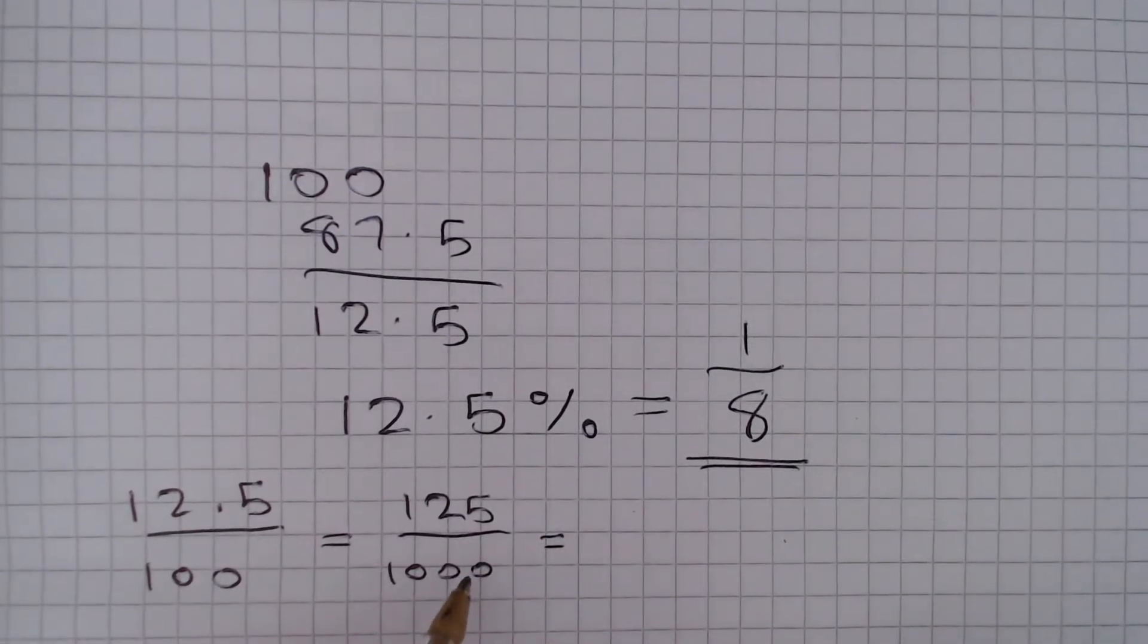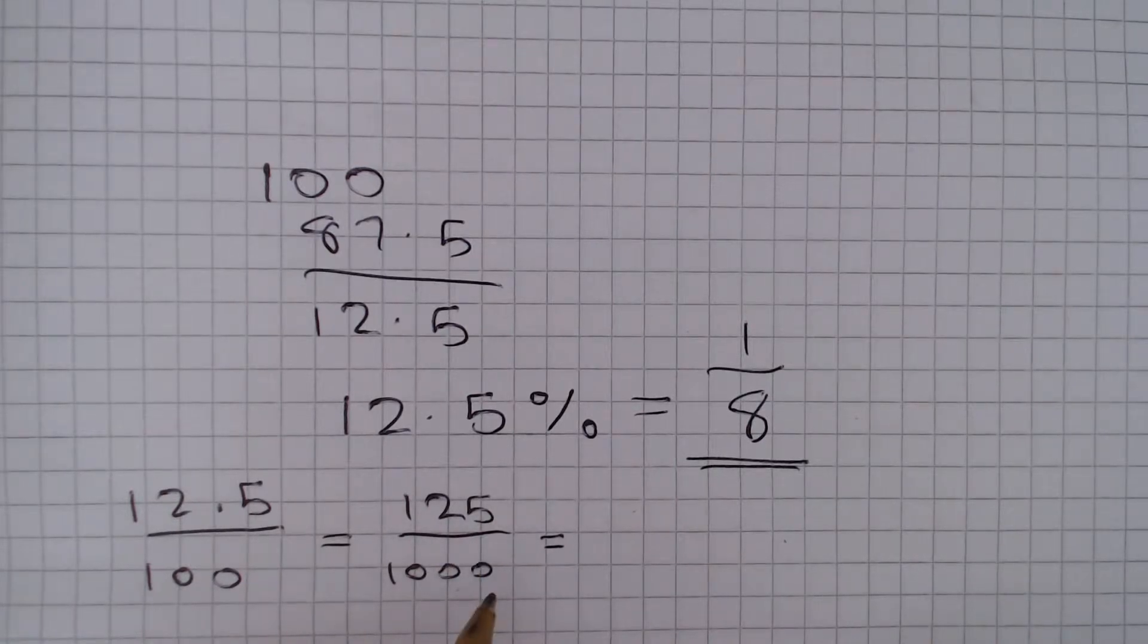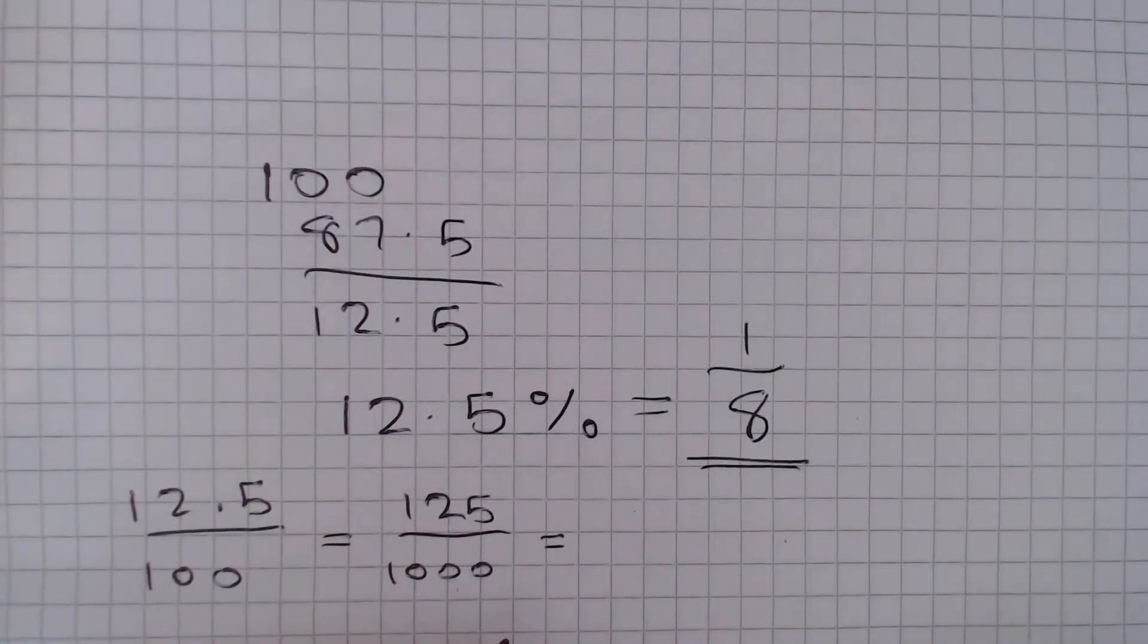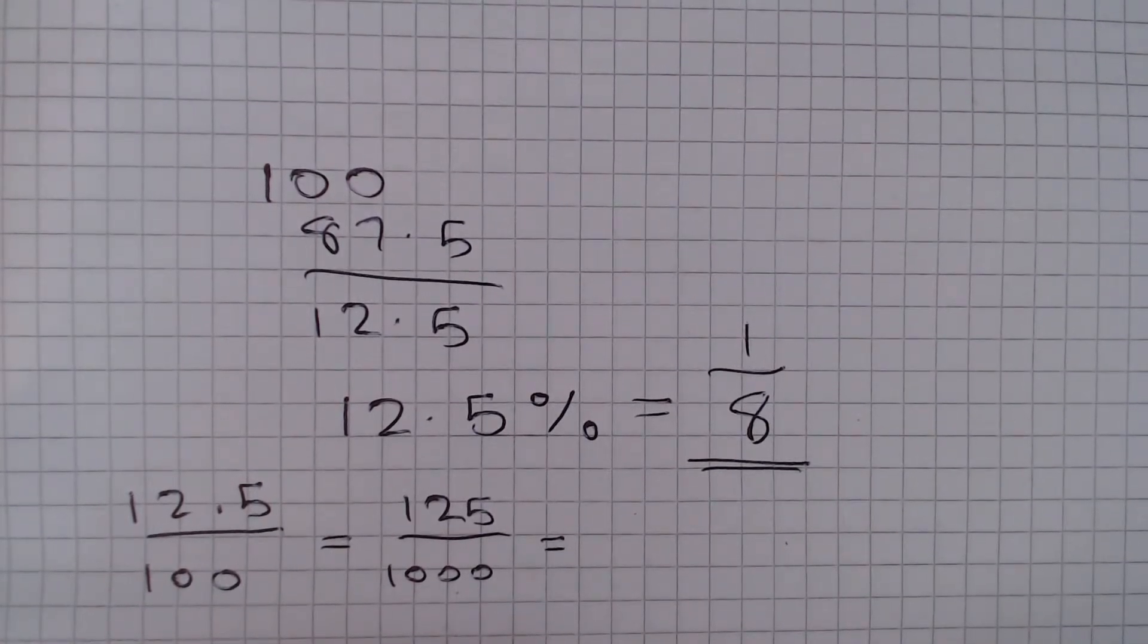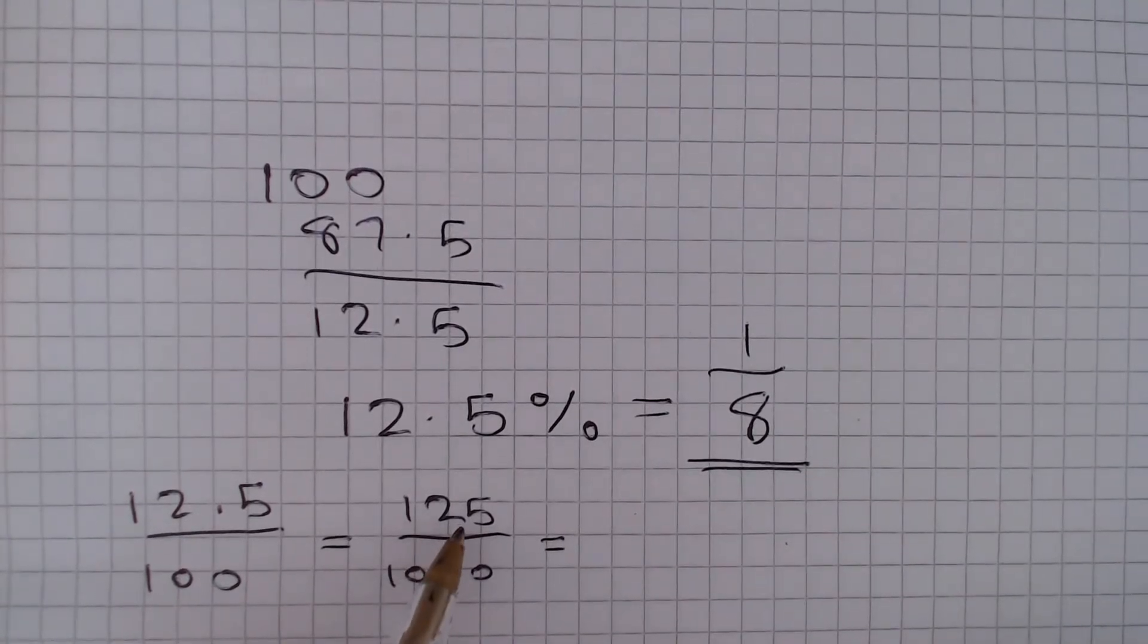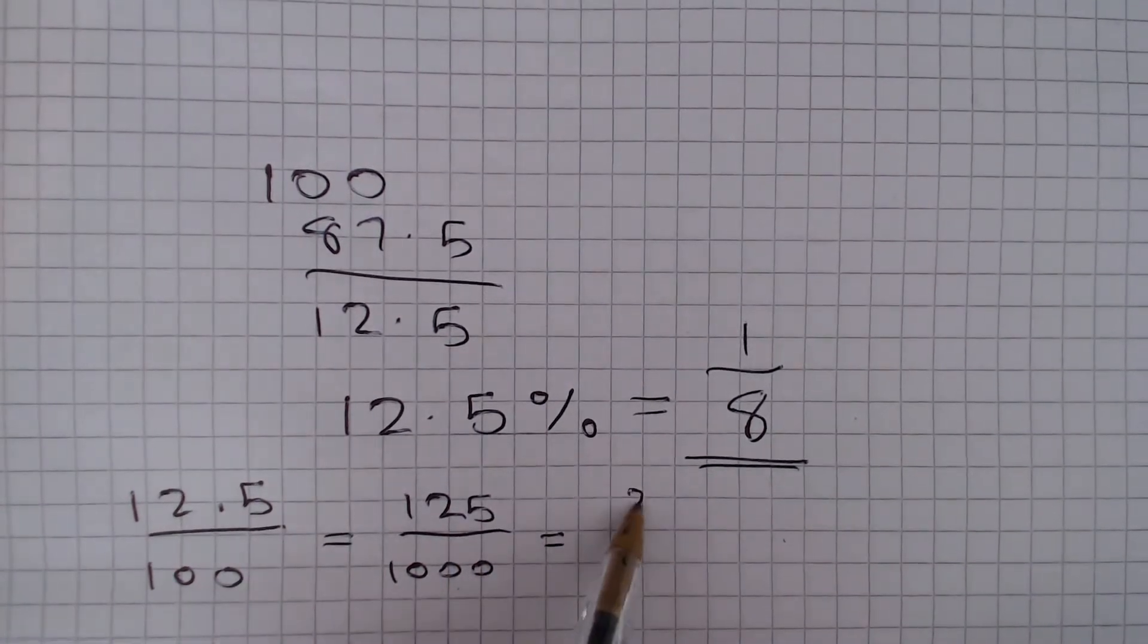And now notice if a number ends in a 0 or a 5, then it is always divisible by 5. So we can divide the top and bottom by 5, and remember to divide by 5, that is the same as multiplying by 2 and dividing by 10. So 125 divided by 5 is 125 times 2, which is 250, divided by 10, which is 25.